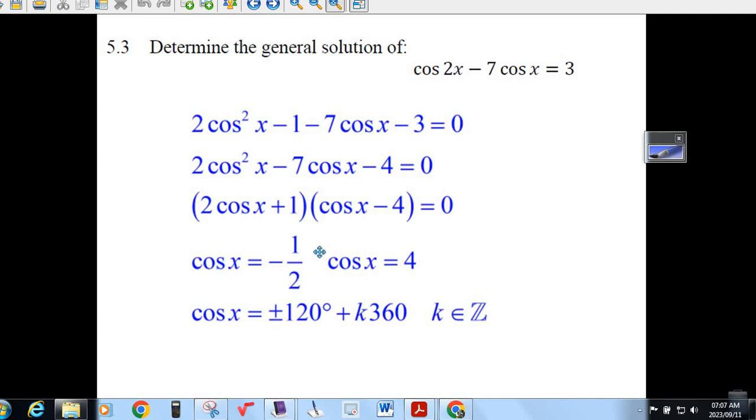Go shift cos of minus 1 half, and your calculator will tell you the angle, it's 120 degrees. But there's two of them, plus and minus 120 degrees. And it repeats itself every 360 degrees. So there's your general solution.